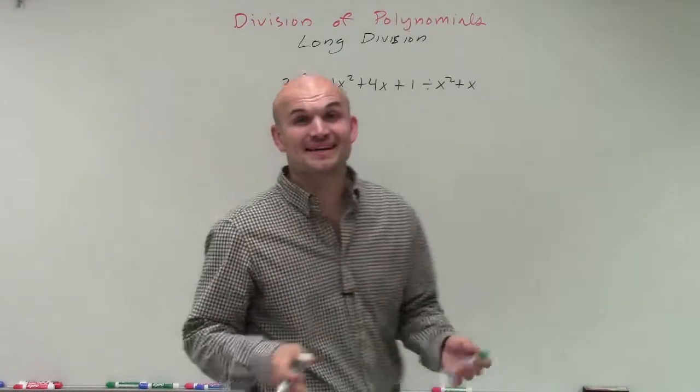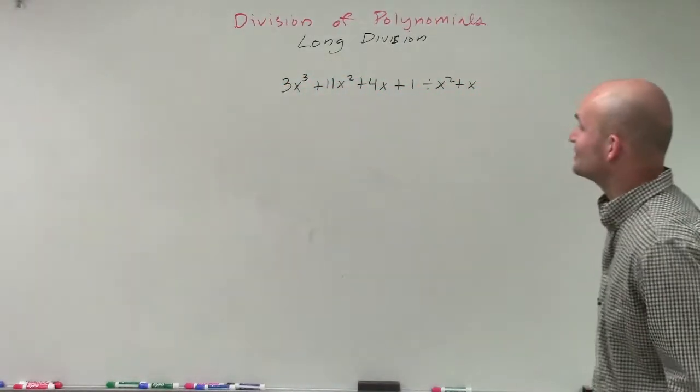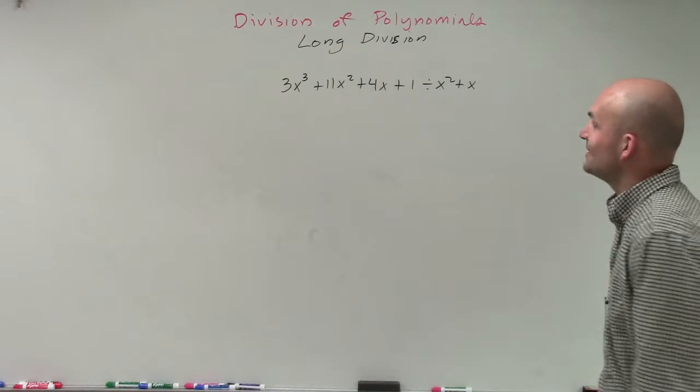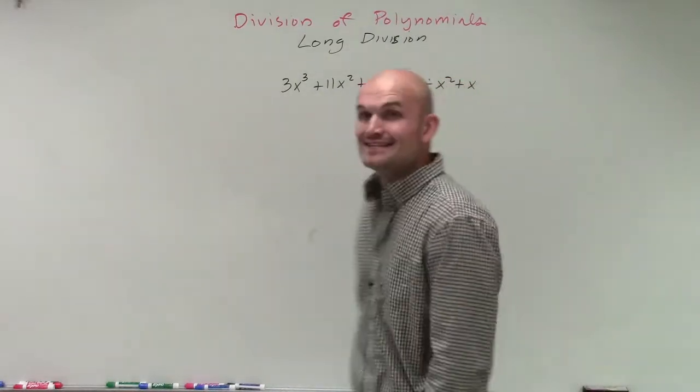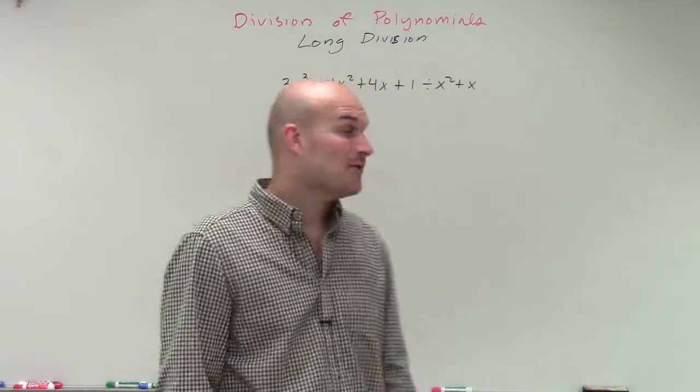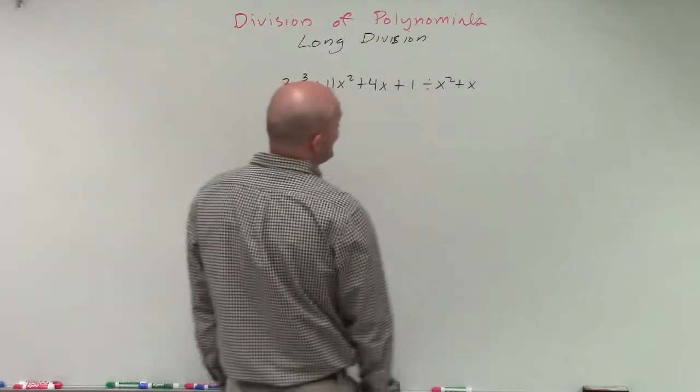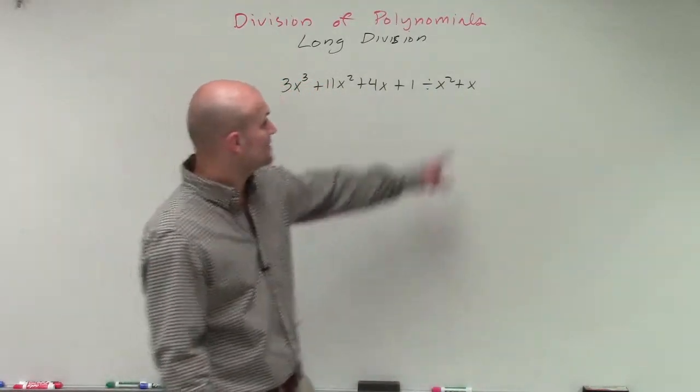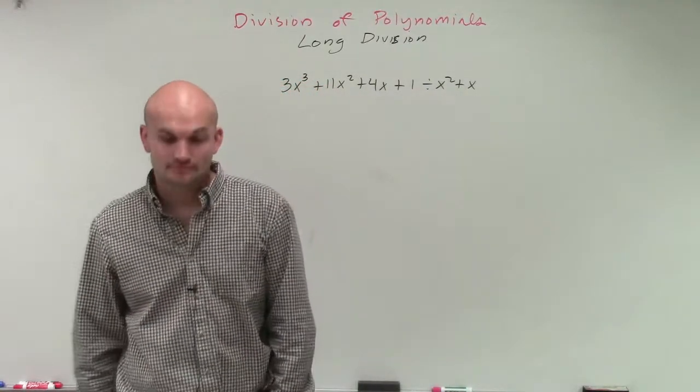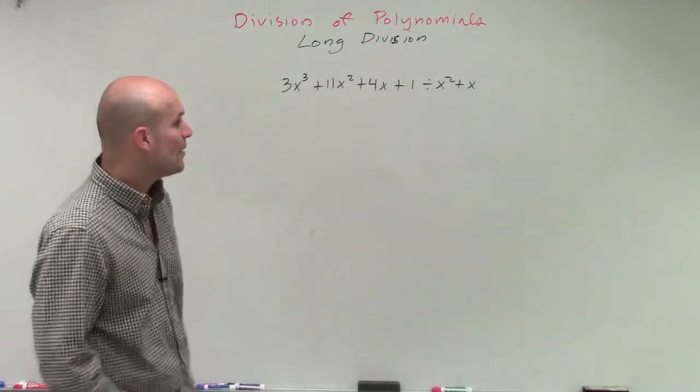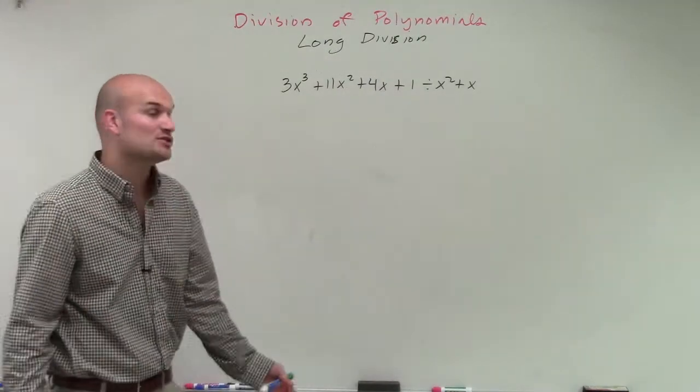All right, so now we're kind of picking it up a little bit. And what you have here, you can see I have 3x cubed plus 11x squared plus 4x plus 1 divided by, now, a divisor that is not linear. This one is now quadratic. As you can see, my leading term is squared, or my degree in this term is a 2, which is squared.